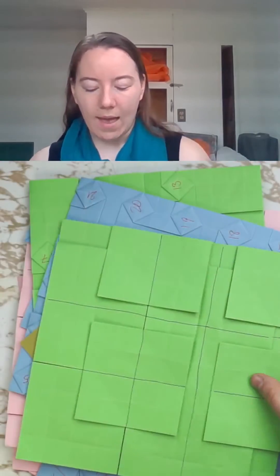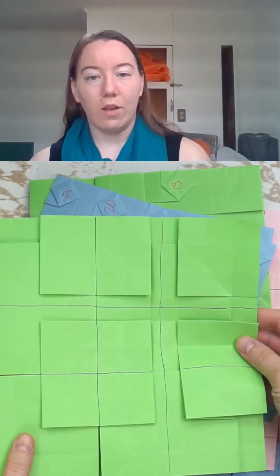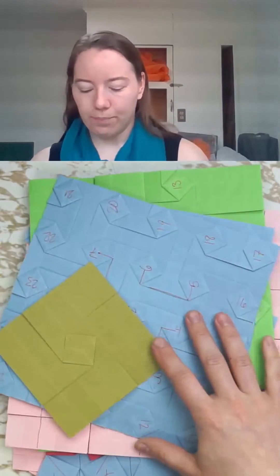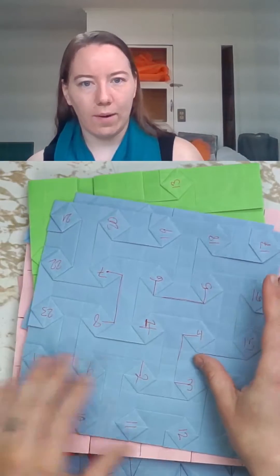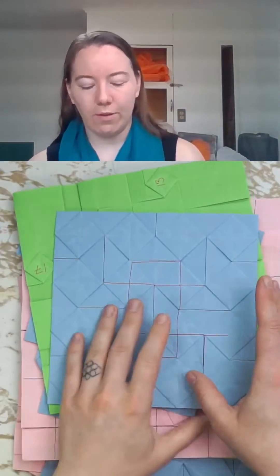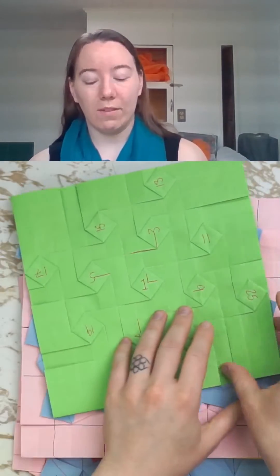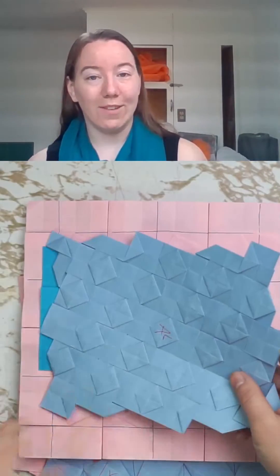and how to use them in a mirrored orientation. Then getting into square twists, putting them closer together, putting them on opposite sides, putting them on opposite sides closer together.